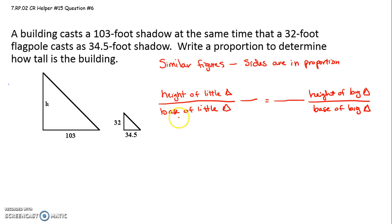If I'm going to do the base of the little on the denominator on the left, then the base of the big has to be the denominator on the right. So my height of my little is 32, the base of my little triangle is 34.5. The height of my big triangle, that's what I'm looking for, is h, and the base of my big triangle is 103.